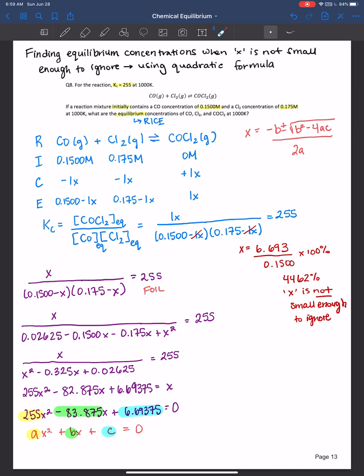All right, so the two solutions that I obtained when I solved for x using the quadratic. I got x is equal to 0.13622, or x is equal to 0.19269. And students are always like, well, which one is it? Like, you know, I get two different values and I have to choose.